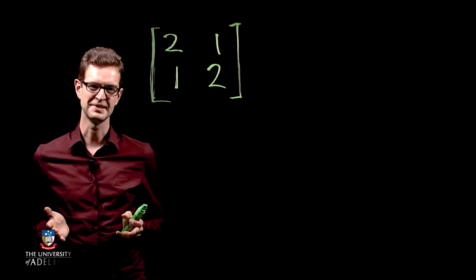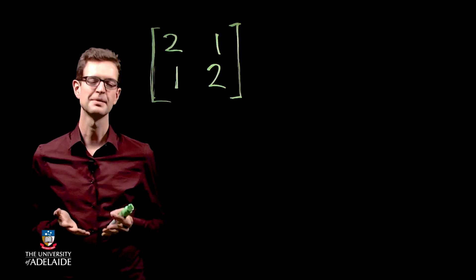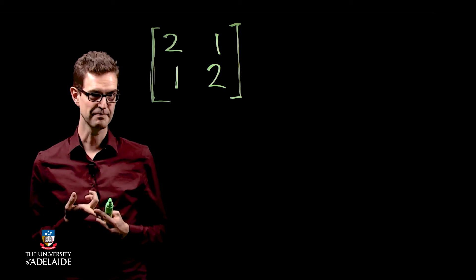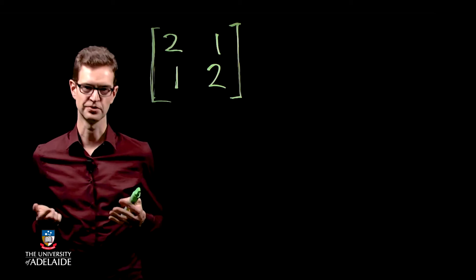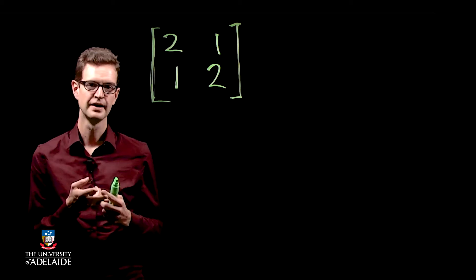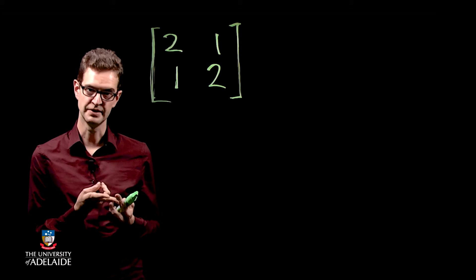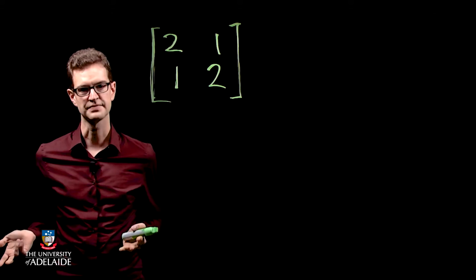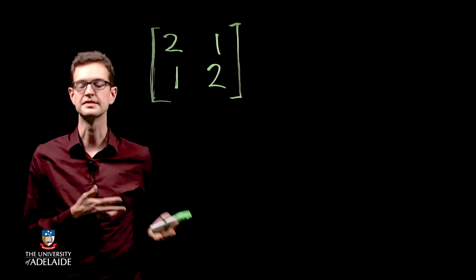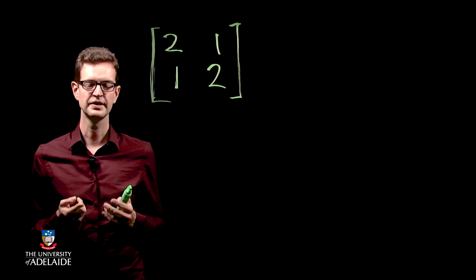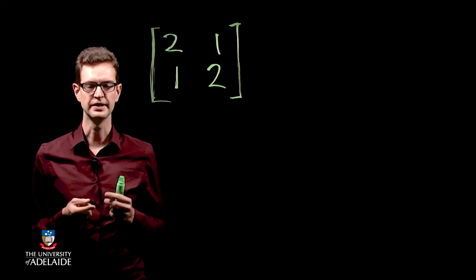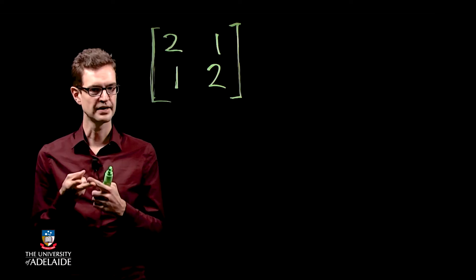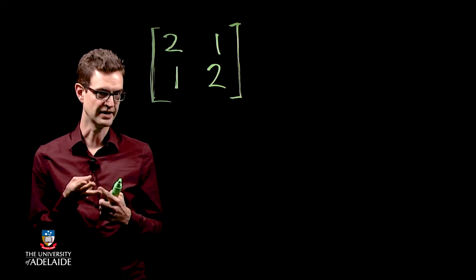To understand the mathematics of PCA we need a couple of different things. We need a little bit of math, which I'm going to talk about now because I'm the math guy, and then we need a little bit of statistics, which John will talk about in the next video because he's the statistics guy. The math we need covers matrices, eigenvalues, and eigenvectors.